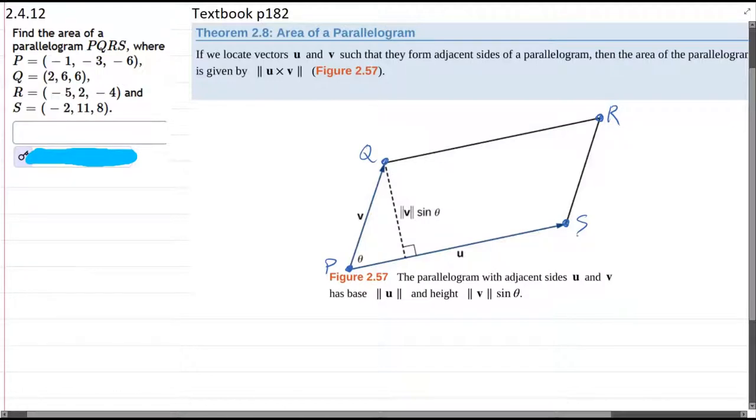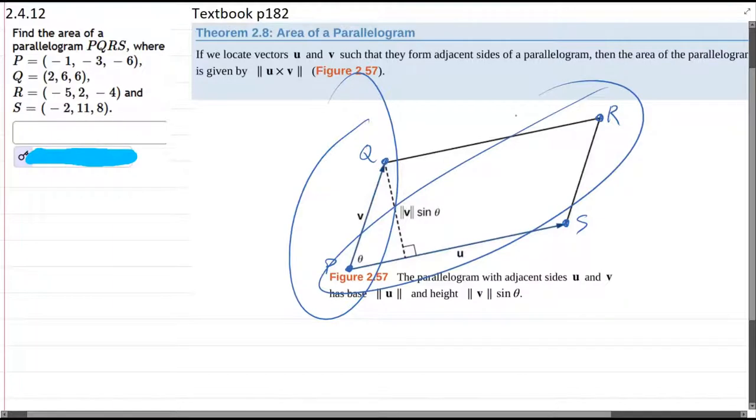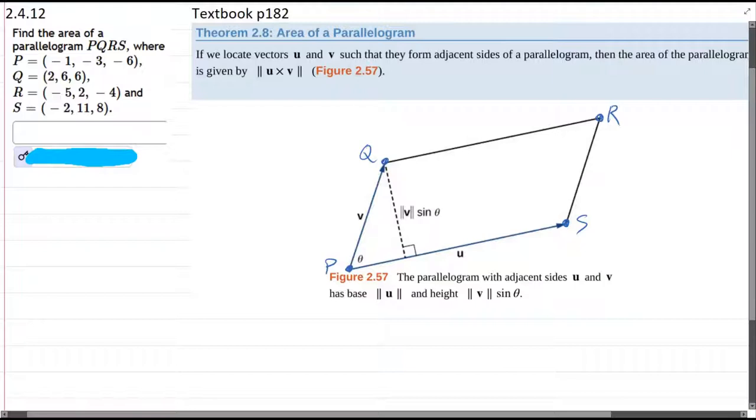All right we need to create vectors here. Now your first question should be how do I know that P and Q are adjacent and maybe P and R are not adjacent? I have no idea.